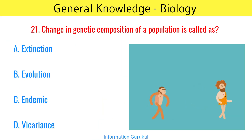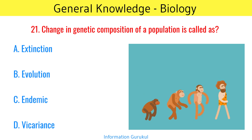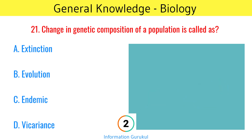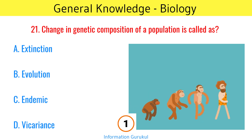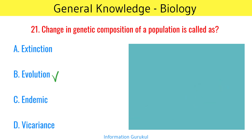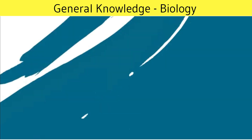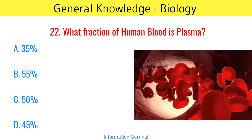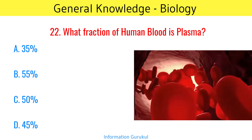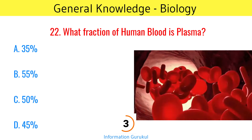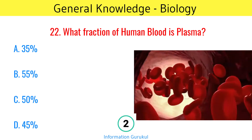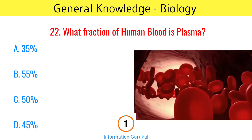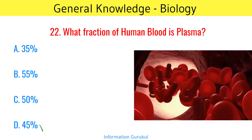Change in the genetic composition of a population is called evolution. What fraction of human blood is plasma? 45%.